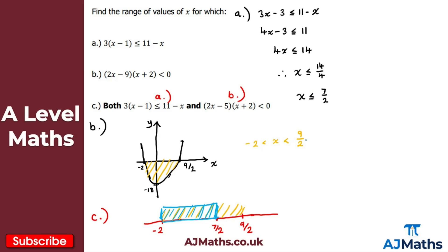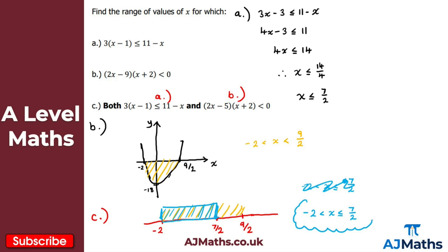We need to be careful about the inequality symbols. The -2 boundary comes from part b, which is a strict inequality (no equals). The upper bound 7/2 comes from part a, which includes the equals sign (≤). So the solution to part c is -2 < x ≤ 7/2.